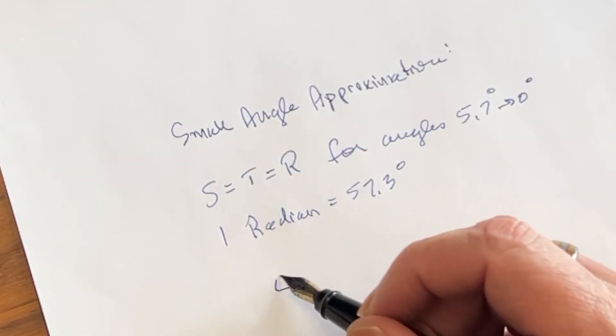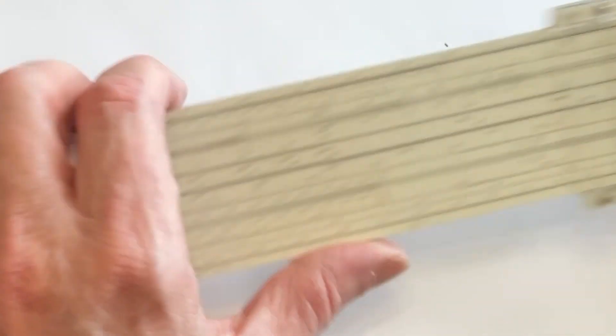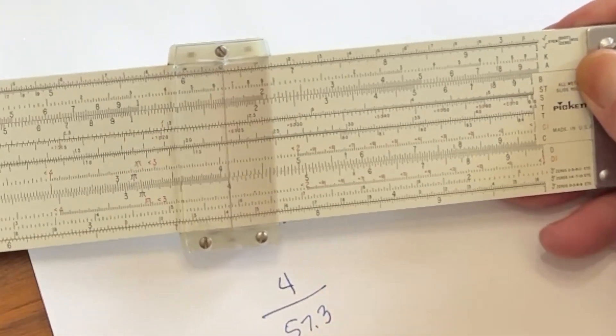So let's look at 4 degrees. So what we would do is we would take 4, and we're going to divide it by 57.3.